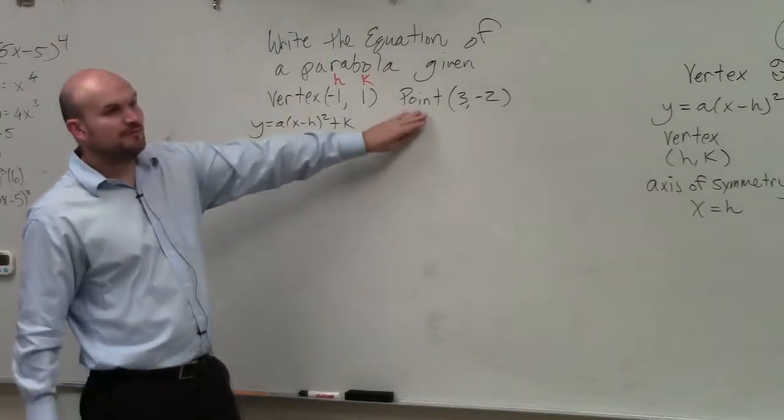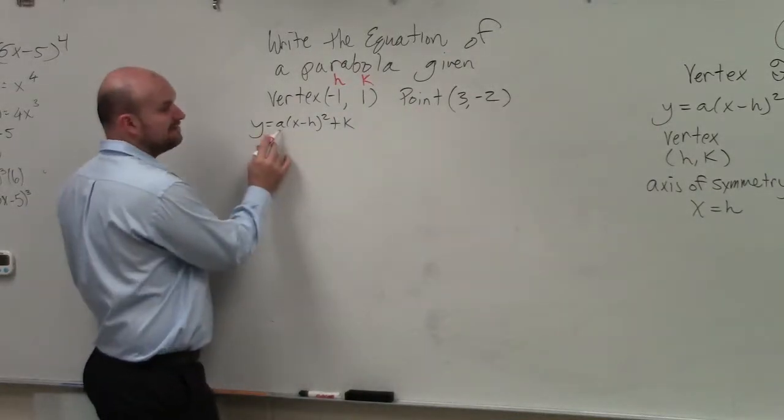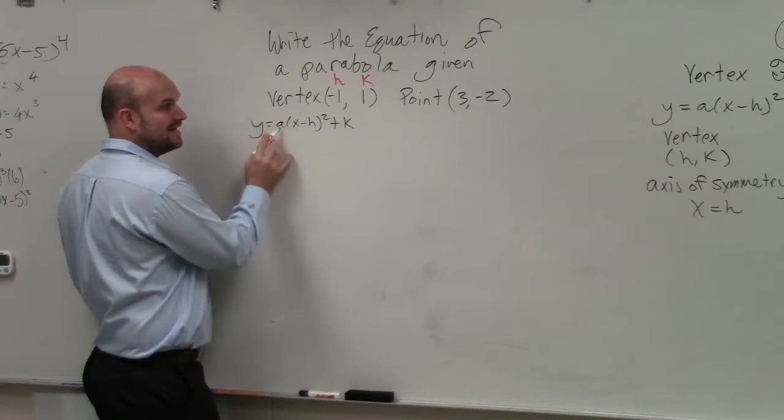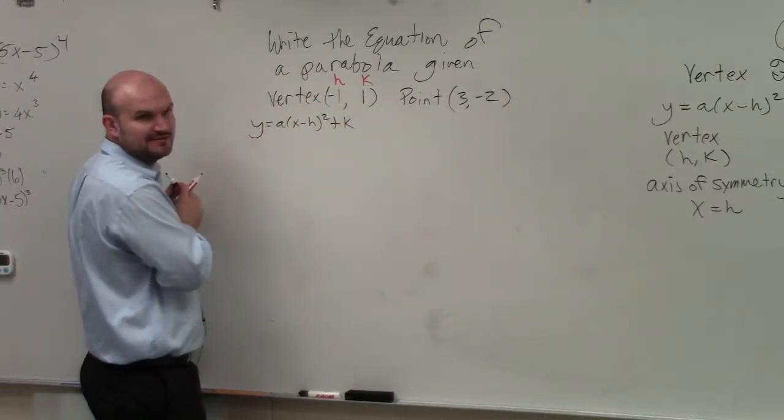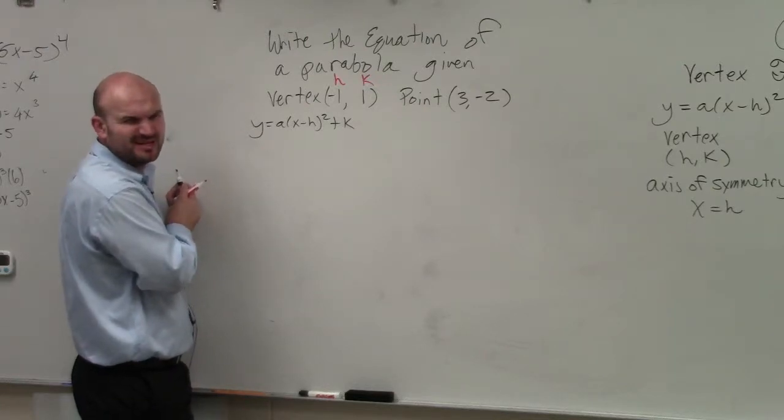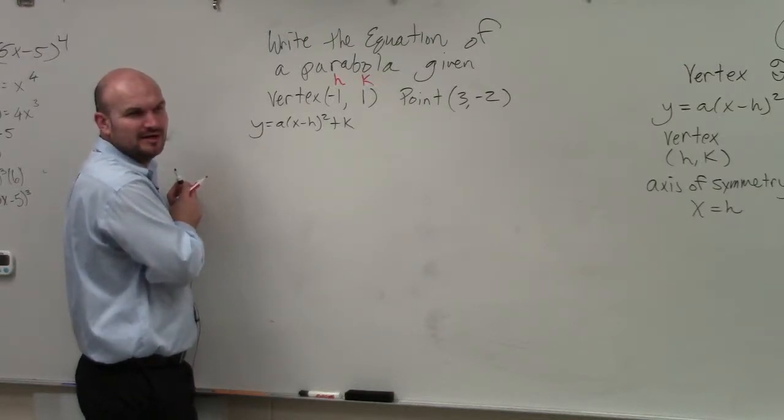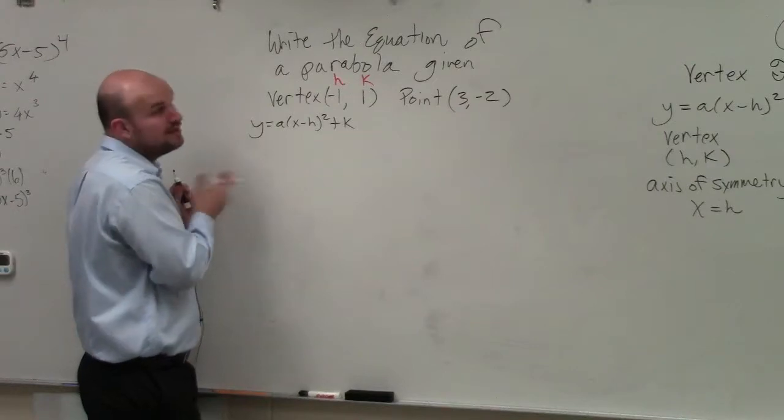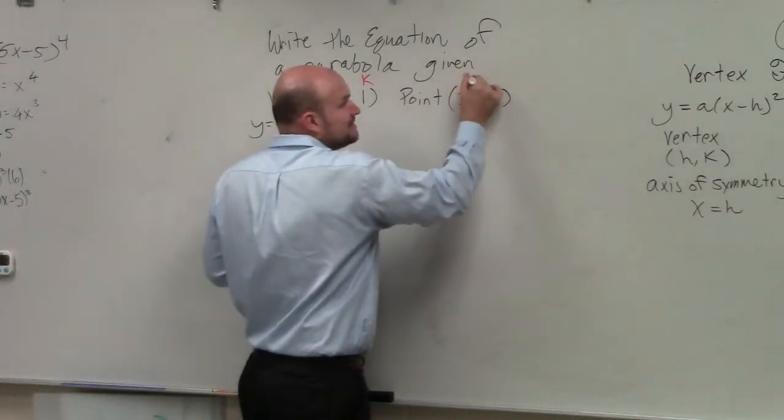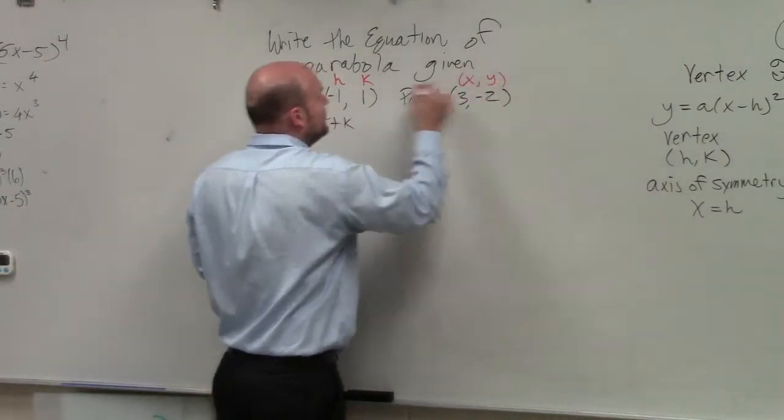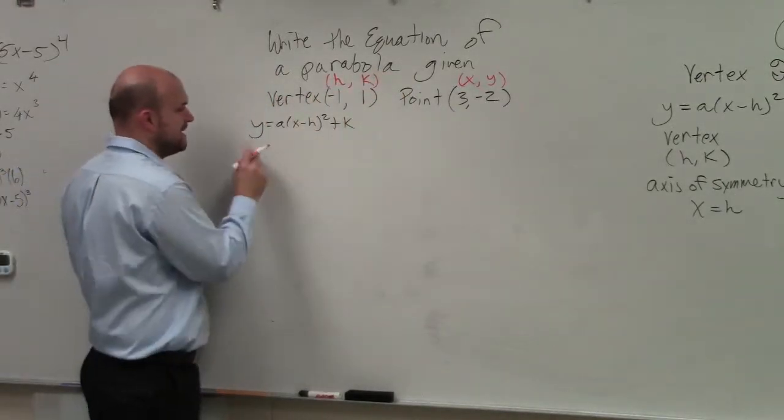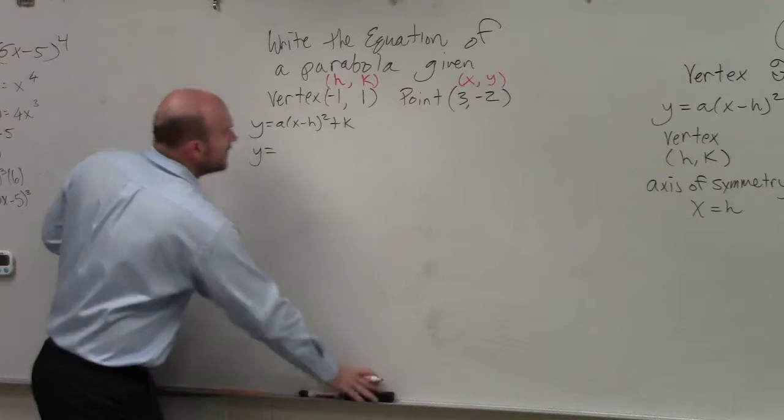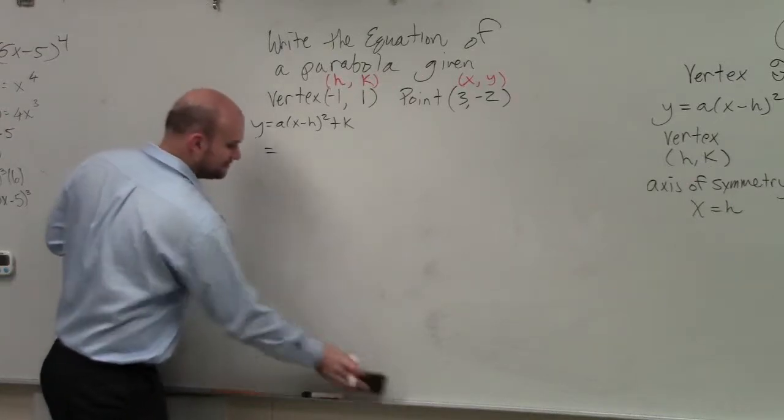The next thing is we have a point. So we still have leftover Y, A, and X. What should our point (3, -2) represent? Y, A, or X? What do you think would make some sense for it to represent? X and Y.